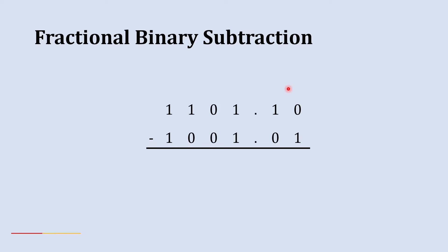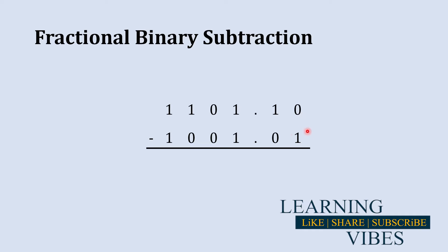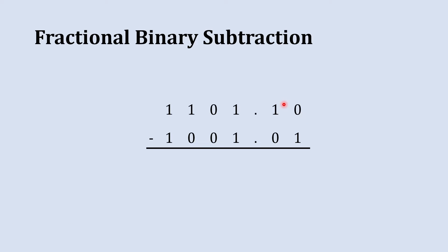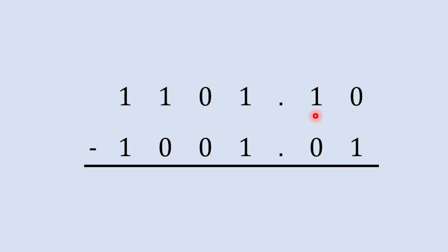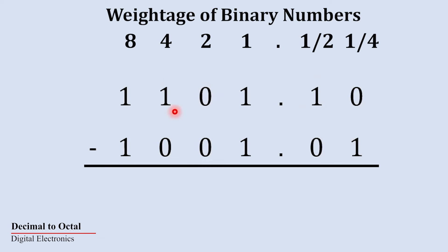Here we are going to subtract two fractional binary numbers. We'll start subtraction from the rightmost column and then move towards the left. When you try to subtract 1 from 0 it is not possible, so we need to borrow 1 from the next column. In binary numbers, the weightage of the next column is two times higher than the previous column.